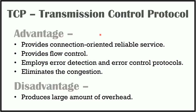Now let's discuss the advantages and disadvantages of TCP. TCP provides connection-oriented reliable service. It provides flow control using the sliding window protocol. It employs error detection with the help of checksum and error control using protocols such as Go-Back-N ARQ. It eliminates congestion using multiplicative decrease and slow start techniques. The disadvantage of TCP is that it produces a large amount of overhead — each new segment gets its own IP header, so fragmentation by routers increases the total overhead.